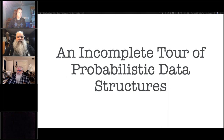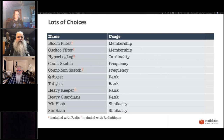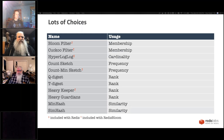This is my incomplete tour of probabilistic data structures — there are a lot of them, and a lot of variations. I've got a few to list and some to dive into detail. The main categories are: membership, cardinality, frequency, rank, and similarity. A lot of these behave like sets, but with limited capabilities and inaccuracies.